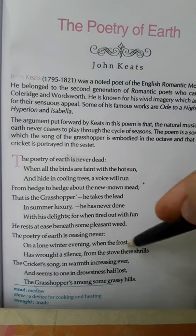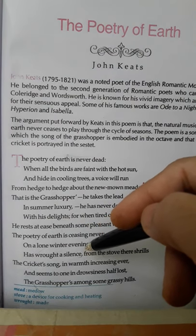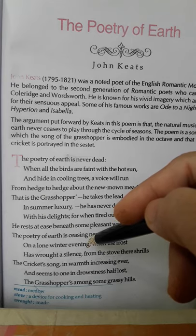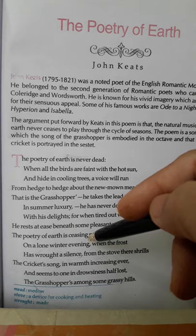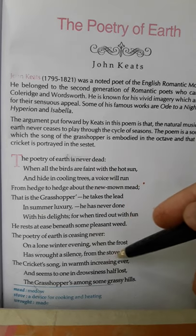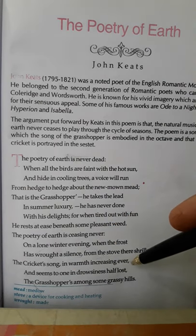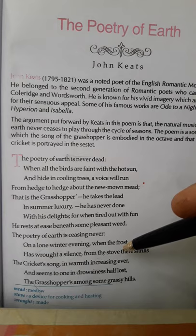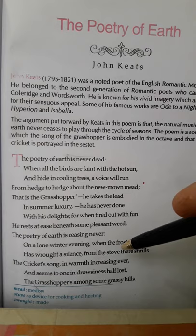'On a lone winter evening when the frost has wrought a silence.' Now the poet turns the reader's view from summer to winter. The winter evening is lone because in icy cold weather everyone stays in his own house, so one feels some loneliness. Frost makes the winter evening chilly and silent. 'From the stove there shrills the cricket's song, in warmth increasing ever.' The poet personifies the small insect cricket. In the winter evening, small crickets take shelter in our house. From their movement around the fireplace, crickets break the silence and make a shrill cry with the increasing warmth.